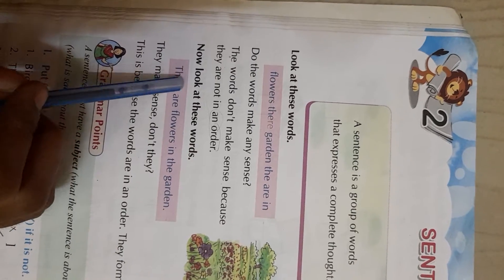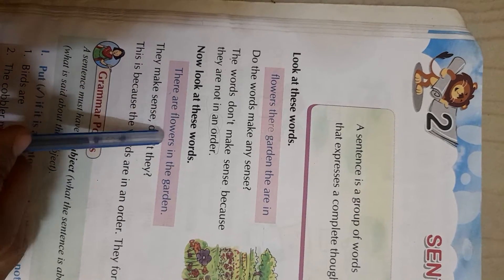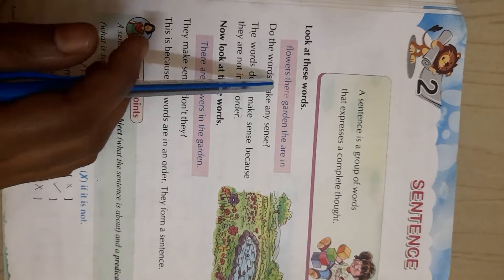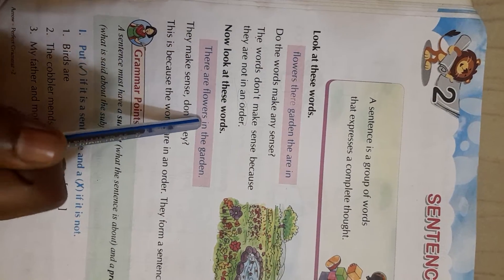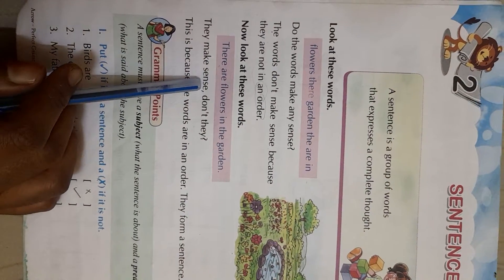Look at the same words here in order. Look at these words: 'There are flowers in the garden.' See that — 'There are flowers in the garden.' They make sense.